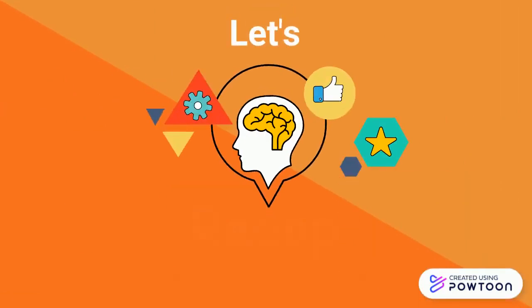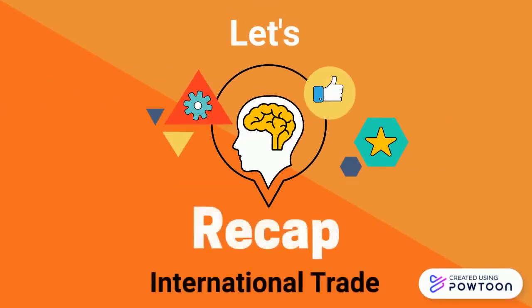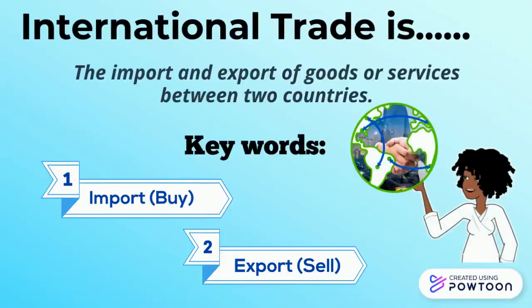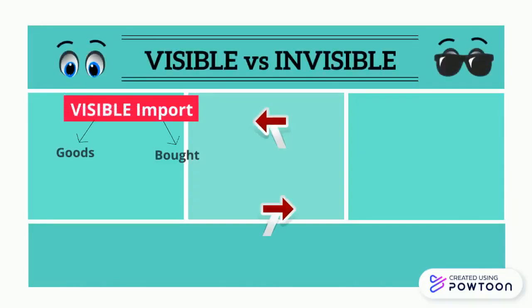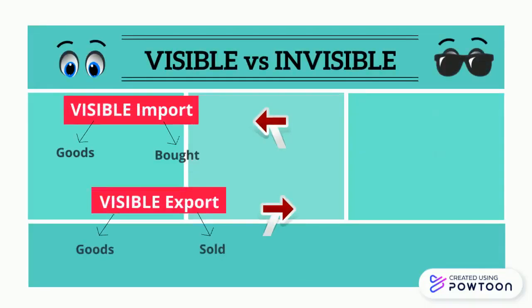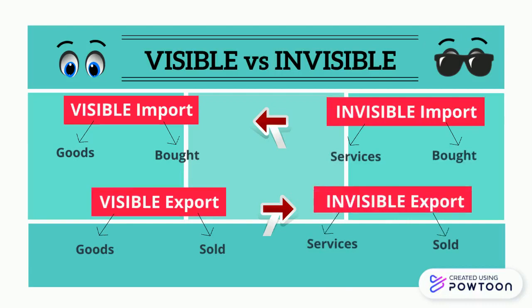Now let's do a quick recap of international trade. Here's our definition that we learned: it's the import and export of goods or services between two countries. We also made a distinct difference between our visibles and our invisibles of import and export.